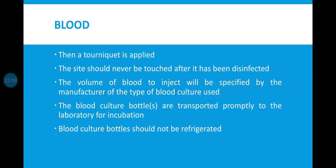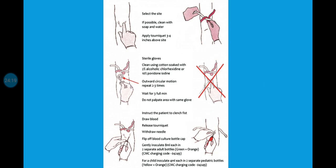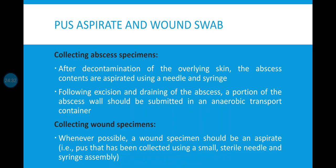The volume of blood to inject into culture bottles is specified by the manufacturer, but the usual recommendation is: 2 ml for infants, 2–5 ml for children, and 5–10 ml for adults for culture. The blood culture bottles are transported promptly to the laboratory for incubation and should never be refrigerated.